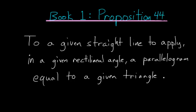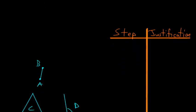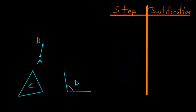For Book 1, Proposition 44 of Euclid's Elements: to a given straight line, to apply in a given rectilineal angle a parallelogram equal to a given triangle. At this proposition, we're essentially given a triangle, some angle, and we need to construct a parallelogram on this line AB that's equal to this triangle in area and contains this angle D.